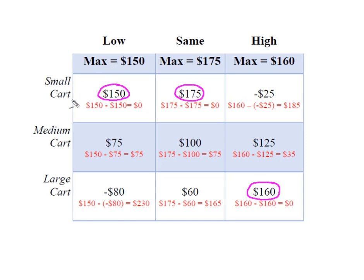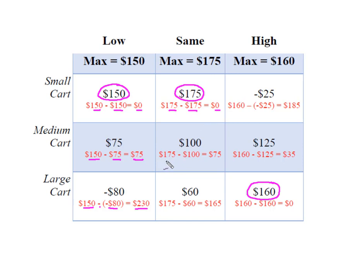Now I'm going to go into each of my decision alternatives and select the payoff from my maximum. For low tourist traffic: 150 minus a payoff of 75 gives me a regret of $75; 150 minus a payoff of negative $80 gives me a regret of $230. For tourist traffic being the same: the maximum minus the maximum payoff gives no regret; the maximum minus the payoff gives $75 regret; and the maximum minus a payoff of $60 gives a regret of $165.